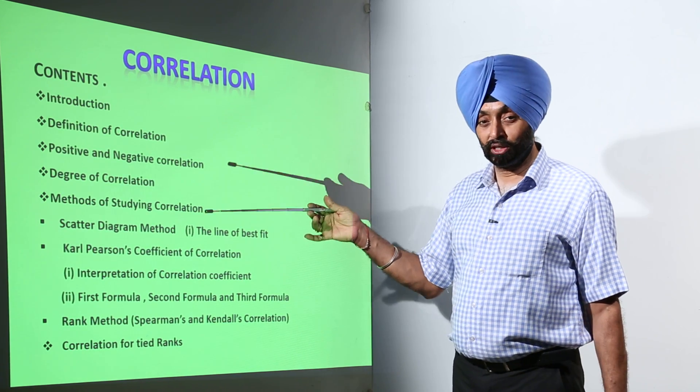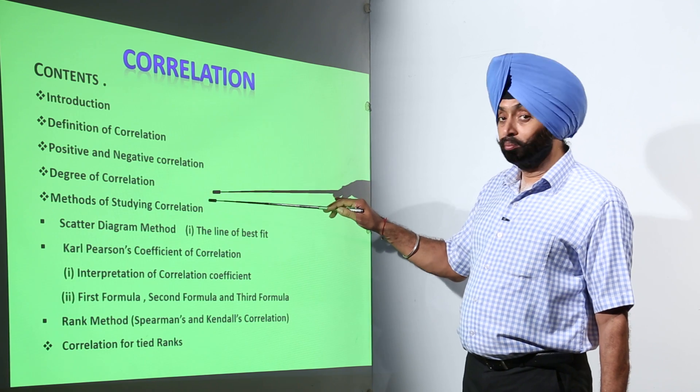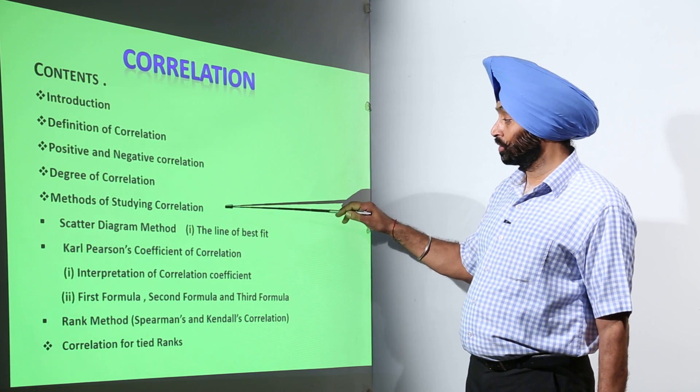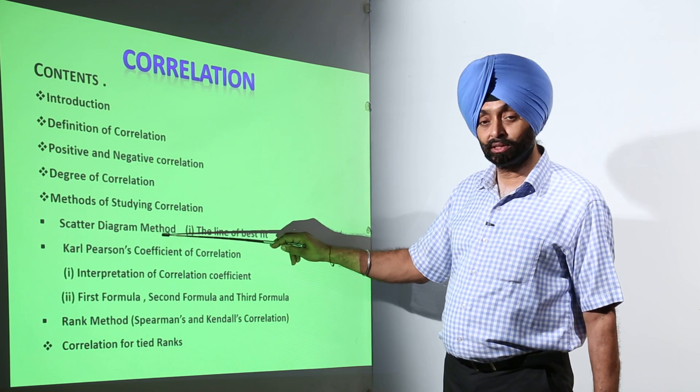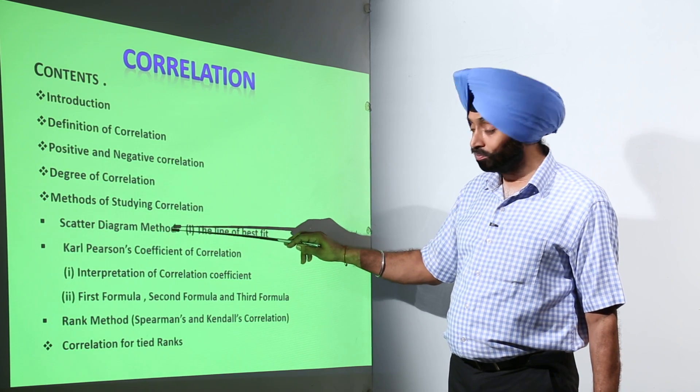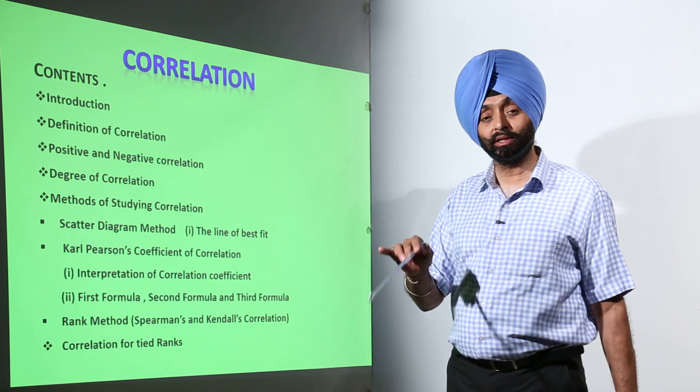Then what is degree of correlation? After that, methods of studying correlation. In the methods first of all we are having scatter diagram method. Basically that is a graphical method.